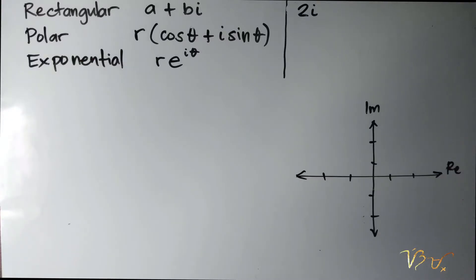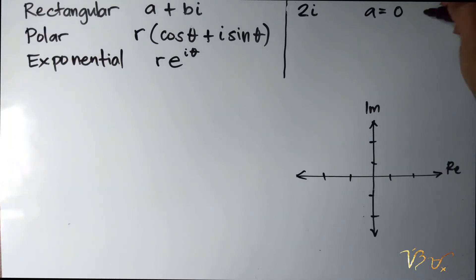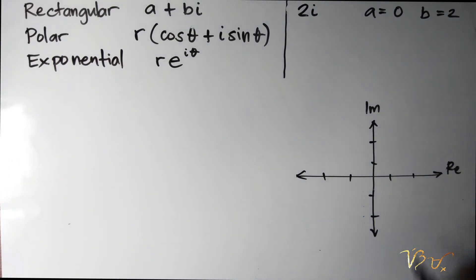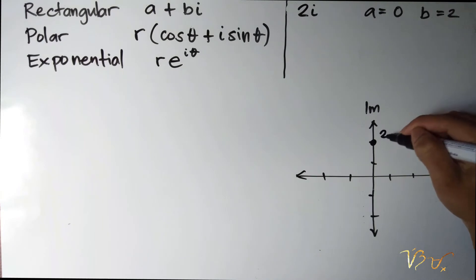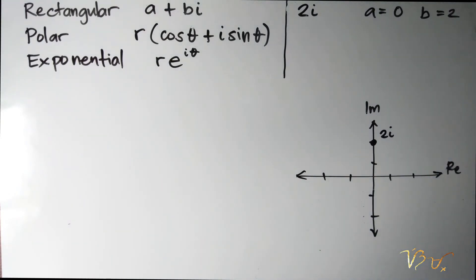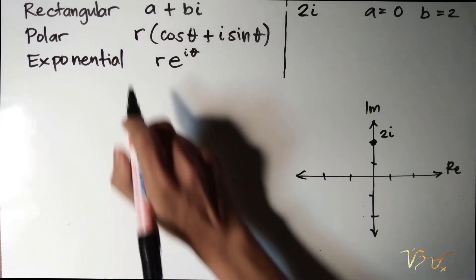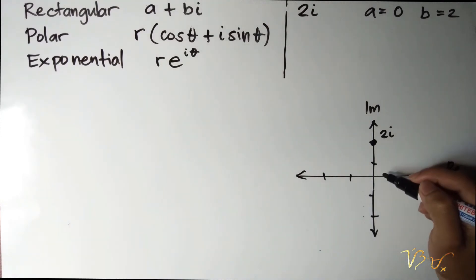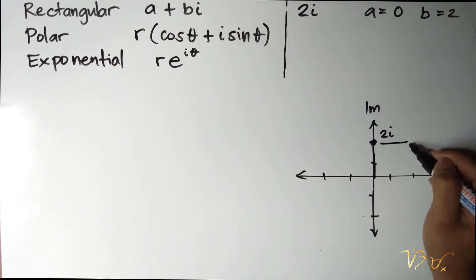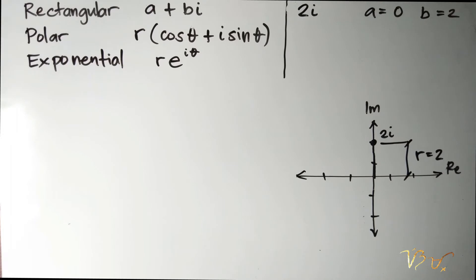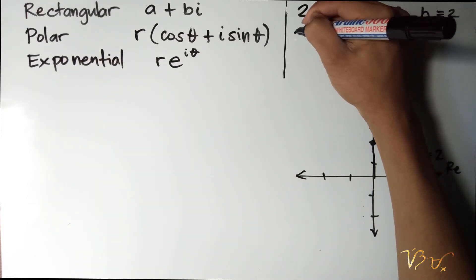Let's have another example: transforming from rectangular to polar and exponential form. We have 2i. By correspondence, a is equal to 0 and b is equal to positive 2. In the Argand diagram, the real part is 0 and the imaginary part is positive 2. We have defined r to be the distance from the origin to the complex number, which is just equal to 2. So r equals 2.